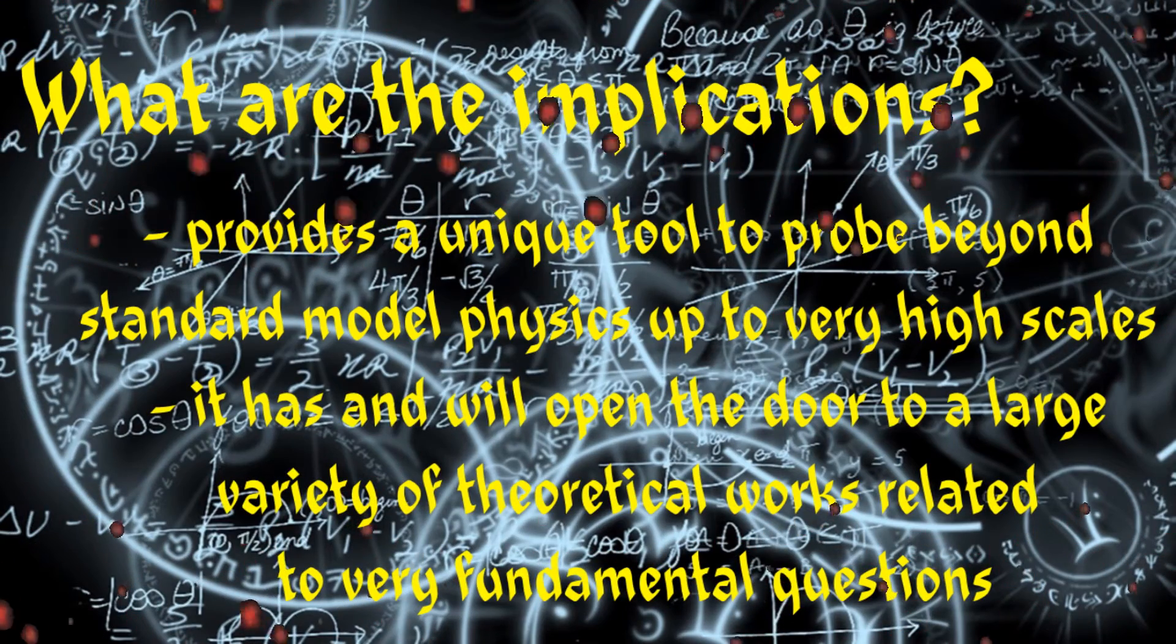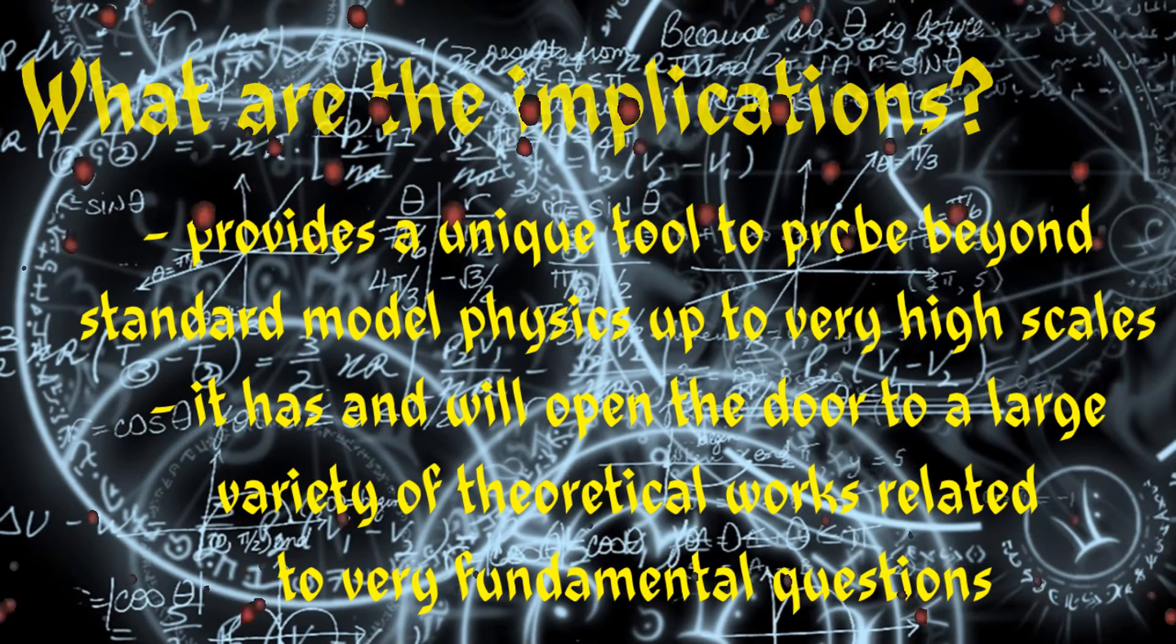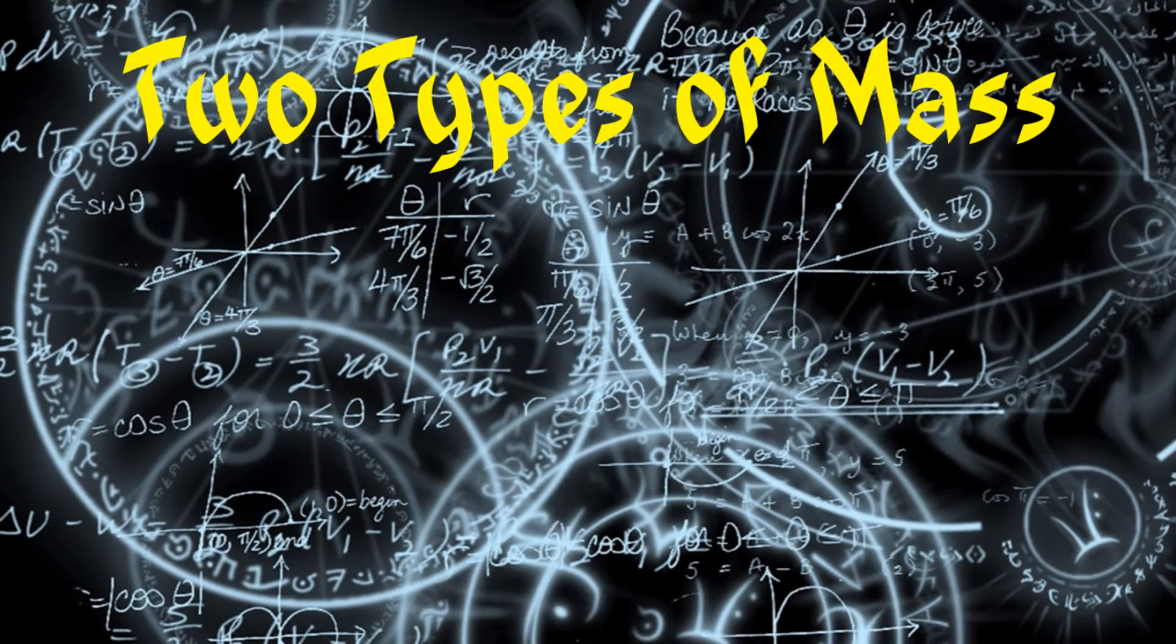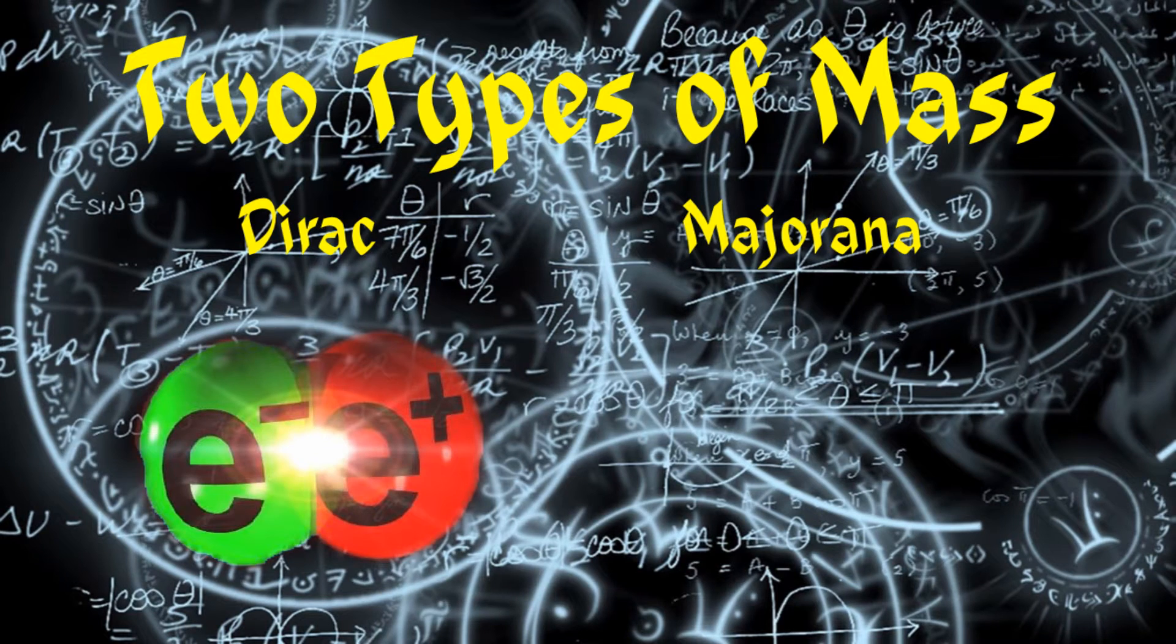There are two possible types of mass a neutrino can have: Dirac mass, or Majorana mass. Dirac mass is more or less normal mass. As in, any Dirac fermion is not its own antiparticle. For example, the antiparticle of an electron is a positron.